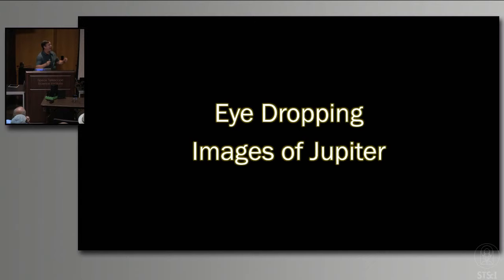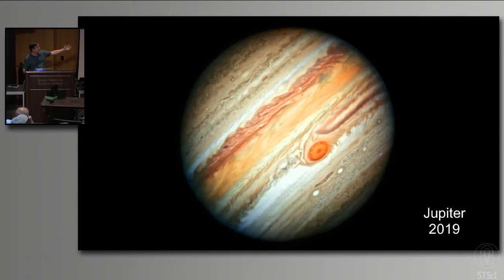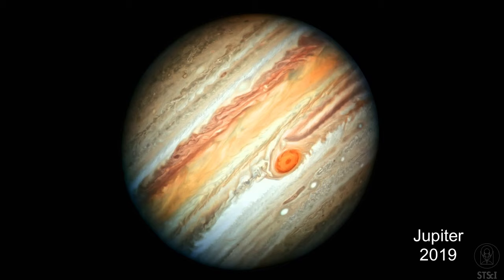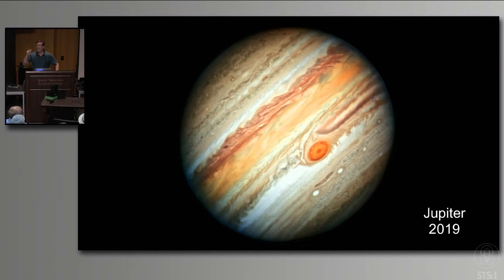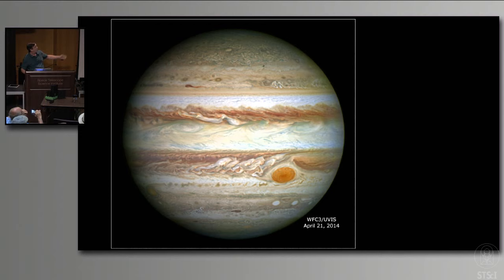Now for our news from the universe for September 2019: I only have one story tonight — eye-dropping images of Jupiter. We take pictures of Jupiter when it's at opposition, and we got another really good one just a few days ago. Here is our image of Jupiter at opposition this year — gorgeous, as Jupiter always is.